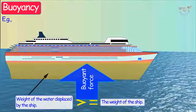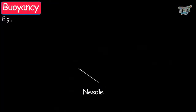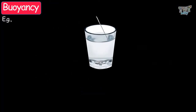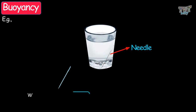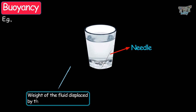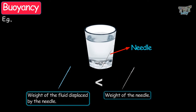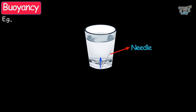The next example is a needle. When you put a needle in water, it sinks because the weight of the fluid displaced by the needle is less than the weight of the needle. This is why the buoyant force experienced by the needle is less than its own weight, so the buoyant force will not be able to support the weight of the needle and the needle sinks.